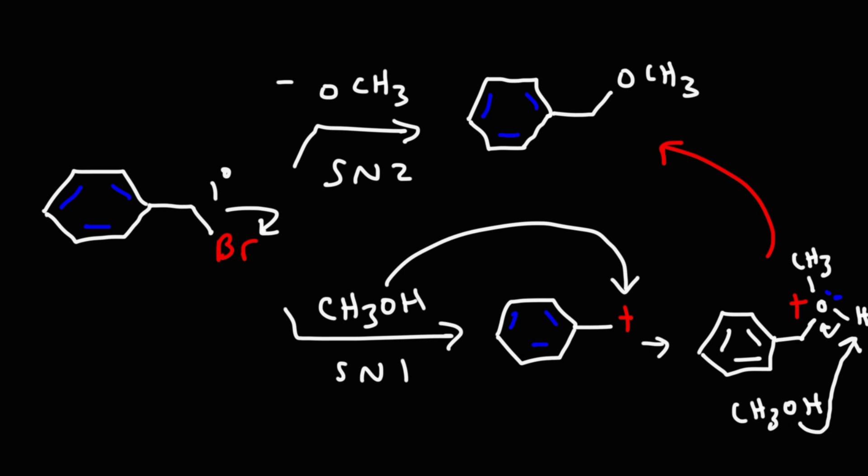So allylic halides and benzylic halides can work well for both SN1 and SN2 reactions. If you're using a weak nucleophile, chances are it's going to be SN1. If you're using a strong nucleophile with a primary or secondary allylic or benzylic halide, it's going to be SN2. If it's a tertiary benzylic halide, it won't favor SN2 — it'll favor SN1. Keep in mind you could also get E1 and E2 reactions with these substrates as well.